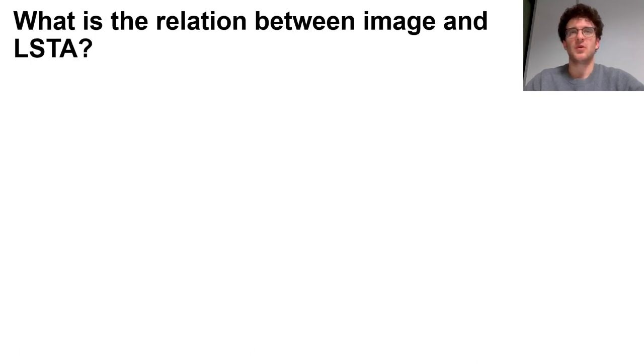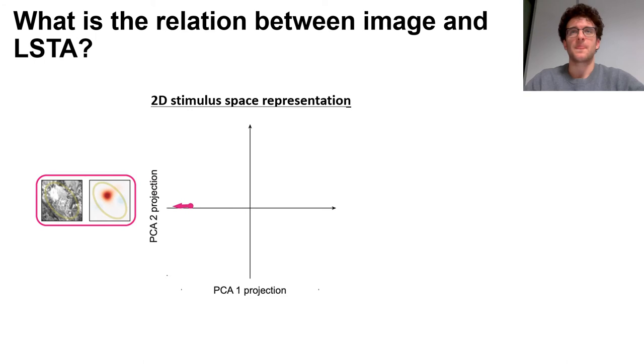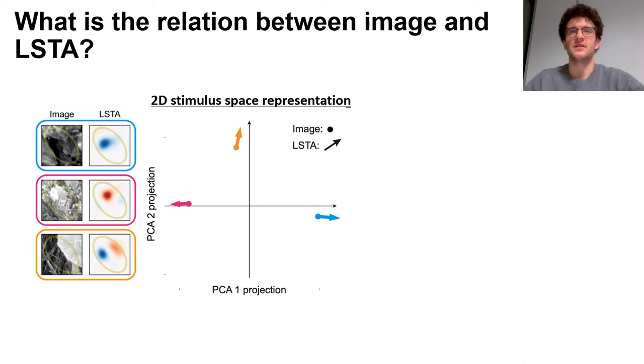So we used those two principal components to project all the image-local STA pairs on a plane. The tail of each arrow is the projection of a natural image and the head of each arrow is the projection of the natural image plus its local STA. The direction of the arrow tells us in which direction we should go to increase the firing rate of the cell. In this example, when the arrows are pointing right, it means that in that region of the stimulus space, the neuron is selective to a light decrease. And when the arrows are pointing left, it means that the neuron is selective to a light increase.